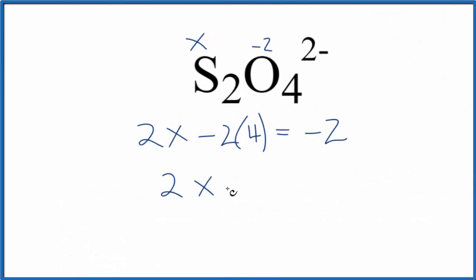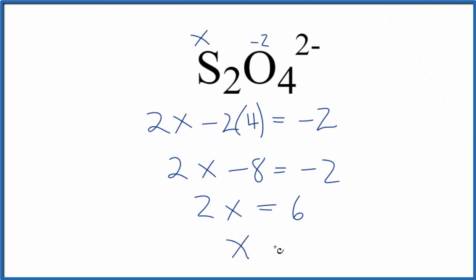So 2X minus 8 equals negative 2. 2X, we'll add 8 to each side, equals 6. Divide each side by 2. X equals a positive 3.